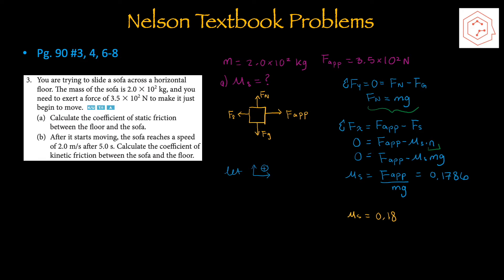Starting with the free body diagram, we have the normal force and gravitational force acting, as well as the static friction which opposes the applied force, and the applied force in the forward direction. Letting upwards and forwards be positive, first solving for the net force in the y component, which is zero since there's no acceleration in y: normal force equals mg since it's sliding across a horizontal floor. Applying this to the net force's x component: applied force minus static friction equals zero since the sofa has just begun to move. Setting that equal to applied force minus mu s times normal, and isolating for mu s, the coefficient of static friction is 0.18.